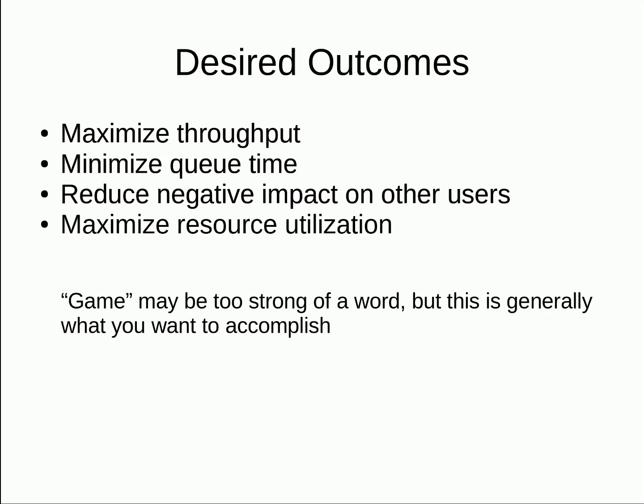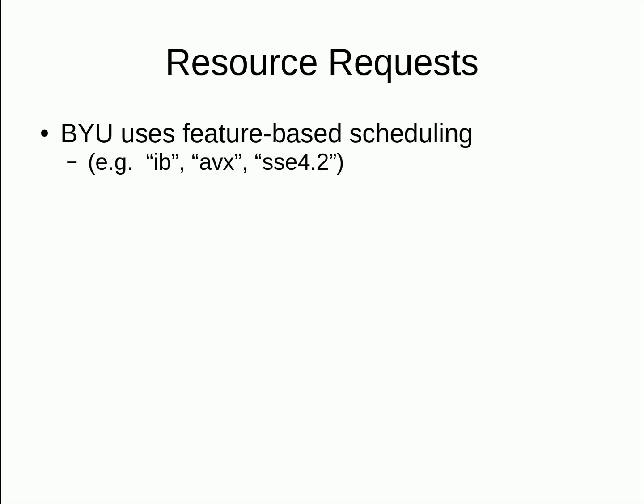It may be obvious, but is worth emphasizing: only request the resources that you need. BYU uses feature-based scheduling instead of having users request a specific partition or queue. For instance, we tag nodes as having InfiniBand, Intel AVX instructions, or other features. Jobs can then request those features as job constraints.